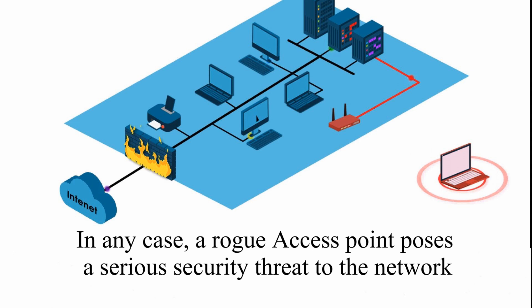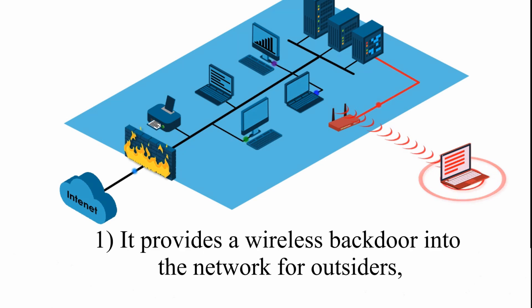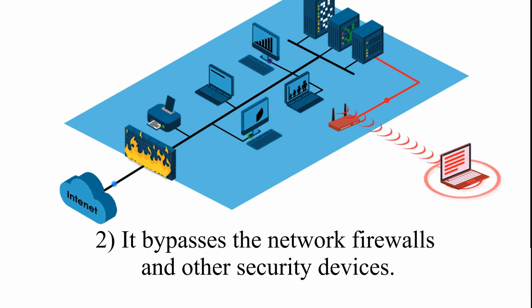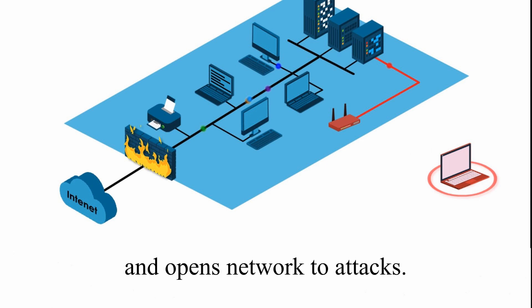In any case, a Rogue Access Point poses a serious security threat. One, it provides a wireless backdoor into the network for outsiders. Two, it bypasses the network firewalls and other security devices, and opens the network to attacks.